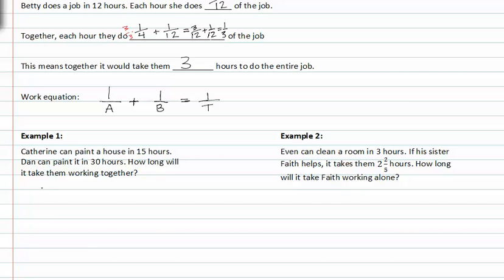In this scenario in example one, Catherine can paint a house in fifteen hours. So Catherine is fifteen. Dan can paint it in thirty hours. So Dan is thirty. And we're asked to find out how long it will take them working together. So together is x.